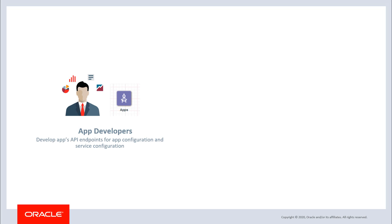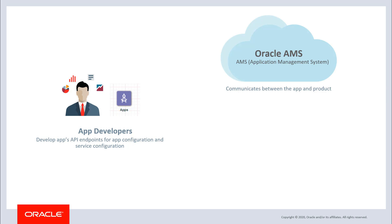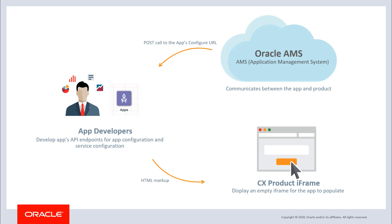As an app developer, you must develop API endpoints for your app so that when AMS calls your app's configured URL endpoint, your app responds with HTML content to fill the iframe within the CX product. This must be done in two scenarios throughout an app's lifecycle.